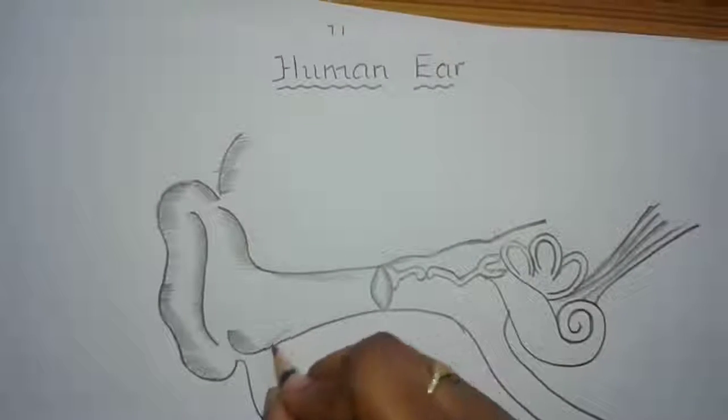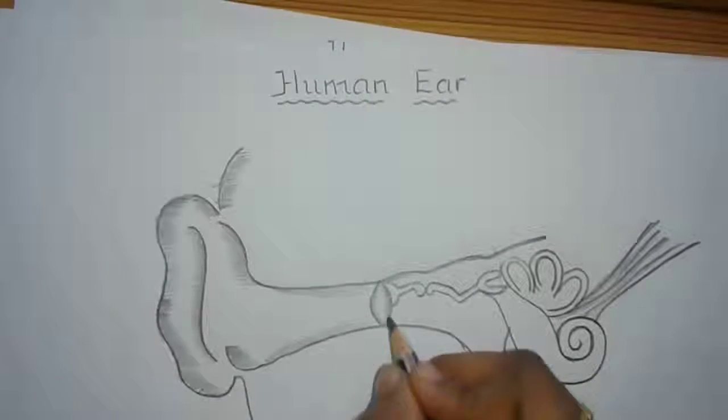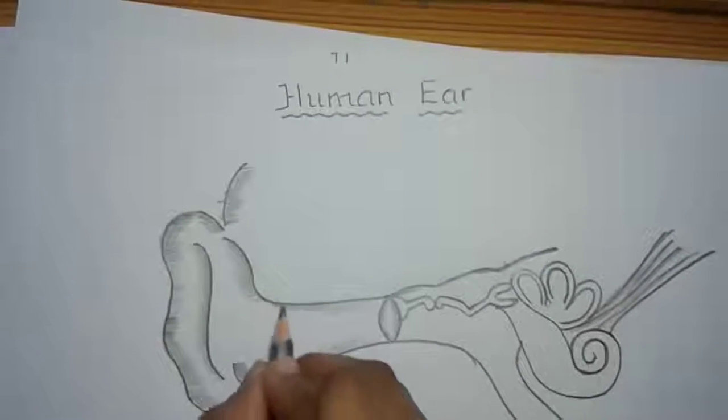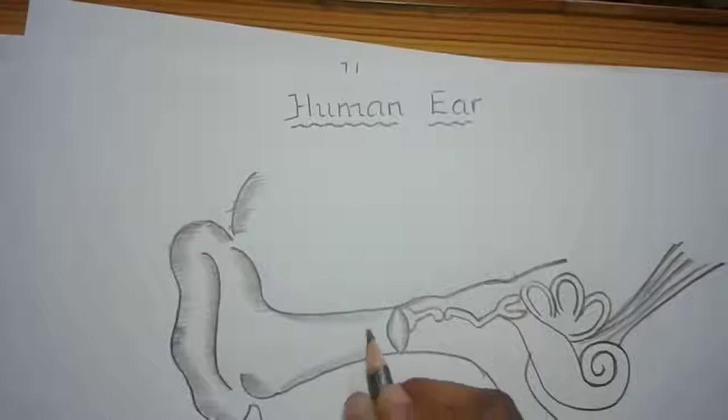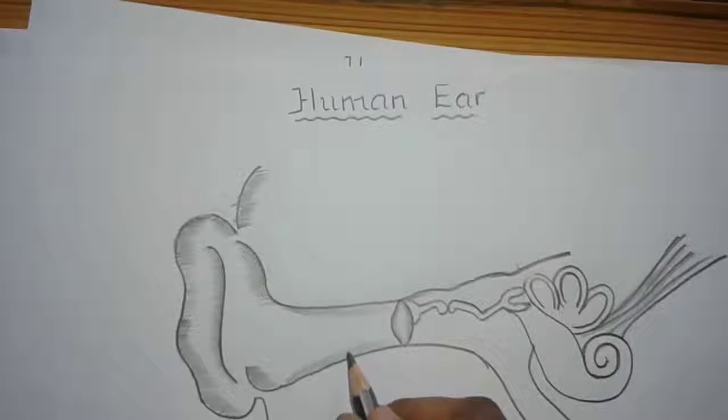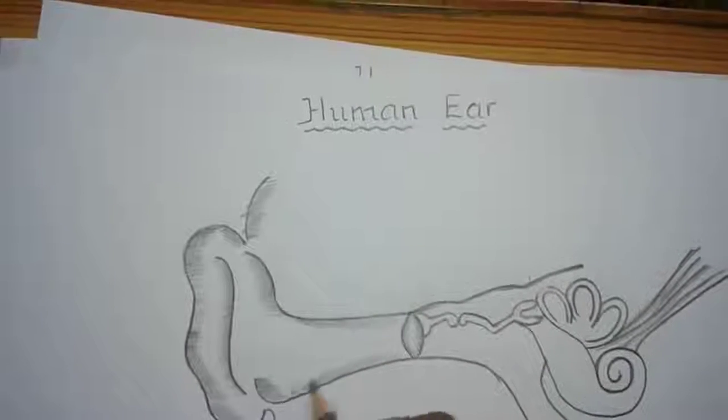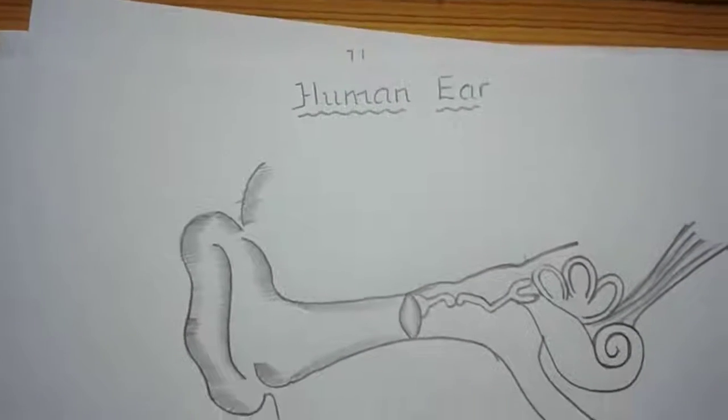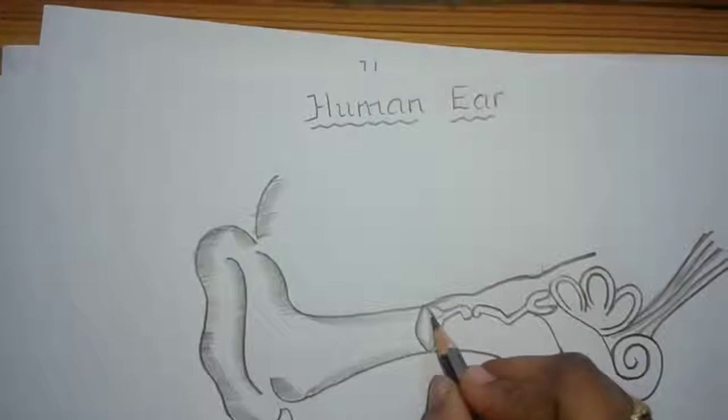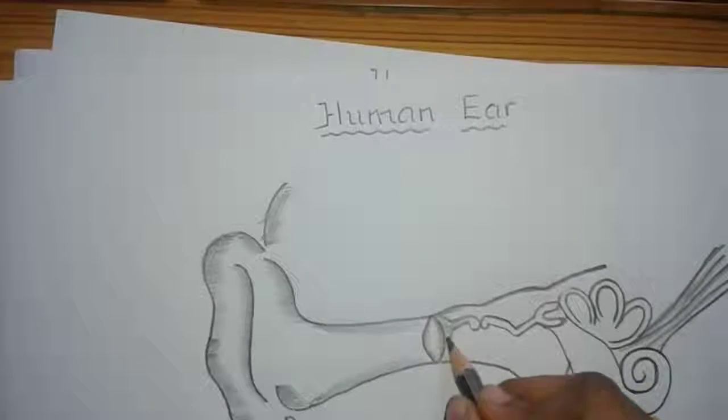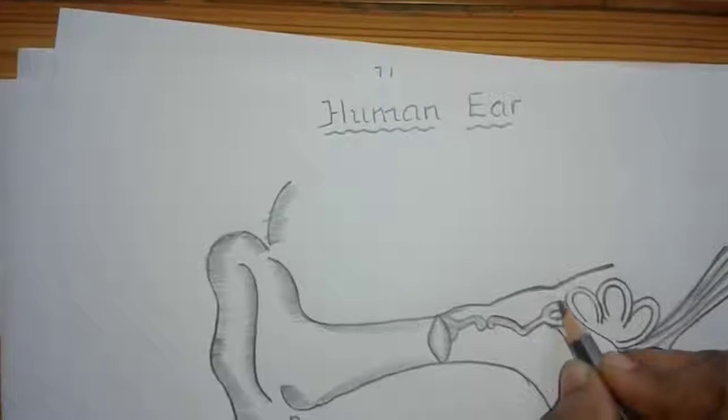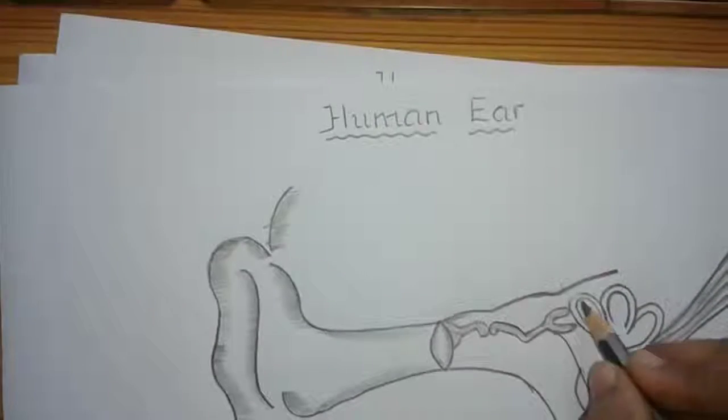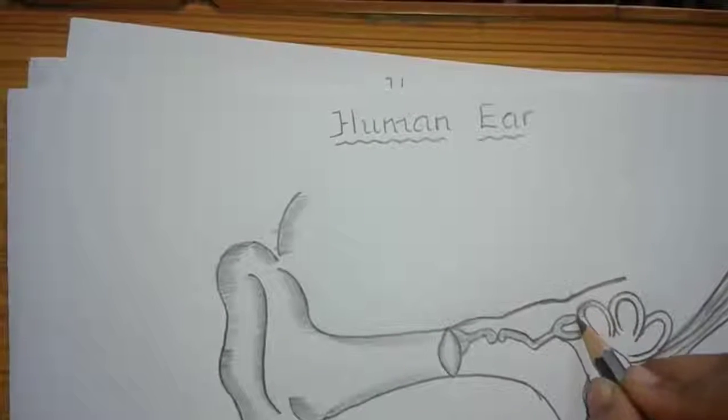Draw the hair in auditory canal which prevents organisms, germs, and dust from entering the auditory canal. Wax produced in the auditory canal entangles the dust. Just shade the three bones: malleus, incus, and stapes, and the semicircular canals.